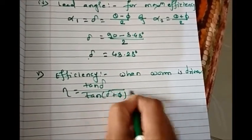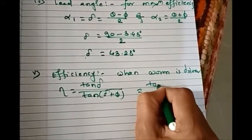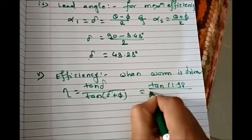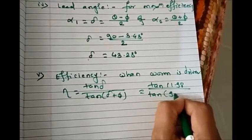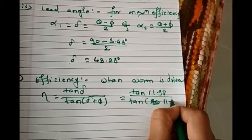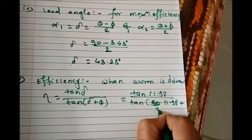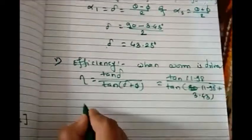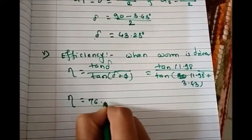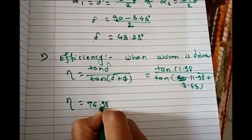So we know the value of delta and phi: tan of 11.98 divided by tan of, delta is 11.98 plus phi is 3.43. So we get efficiency mu equals 76.98 percent.